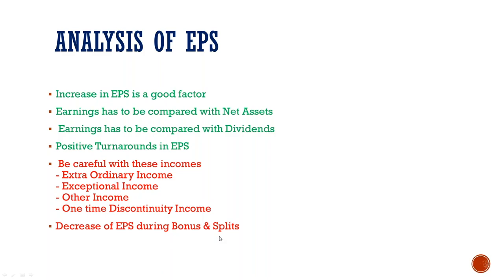Decrease of EPS during bonus and splits: in general, EPS is less after a bonus or split because the EPS formula divides by number of shares, and the number of shares increases. However, this doesn't mean the company is worse — we know the company has issued more shares through a bonus or split, so we must adjust our analysis accordingly.